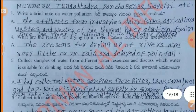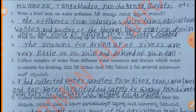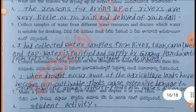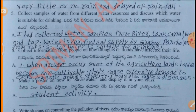Write a brief note on water pollution. The effluents from industries, dairy farms, agricultural wastages and wastages of the thermal power station drain into the river, polluting it. What are the reasons for drying up of rivers? The reasons for drying up of rivers are very little or no rain and delay of rainfall. Collect water samples from different water resources and discuss which is suitable for drinking. I collected water samples from river, tank, canal, well and tap. Water is purified and supplied by Gram Panchayat from taps, so tap water is suitable for drinking.